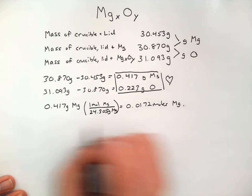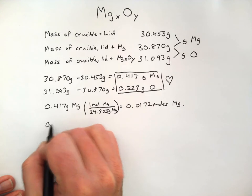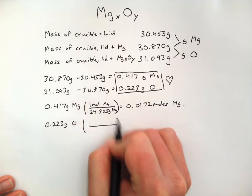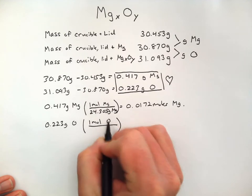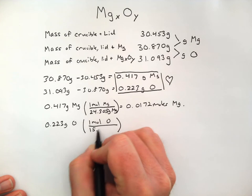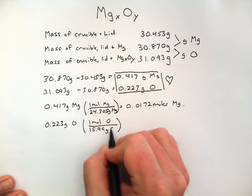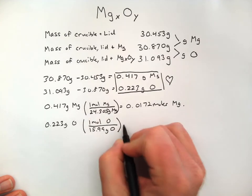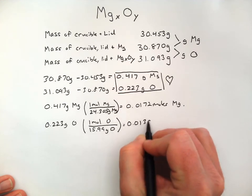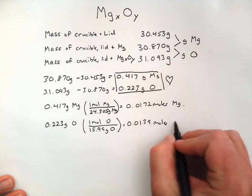Okay, and I'm going to do the same thing for the oxygen, 0.223 grams of oxygen. One mole of oxygen has a different mass from the periodic table at around 15.99. There are some more decimal digits there, but I won't use them. And, when I do this division, I get a value of 0.0139 moles of oxygen.